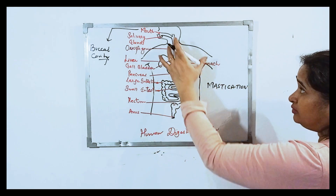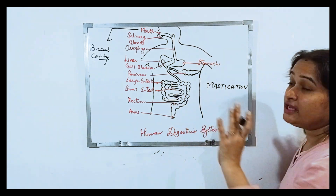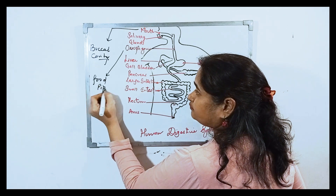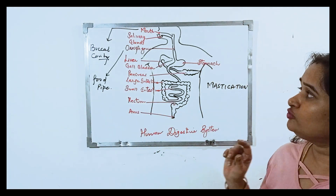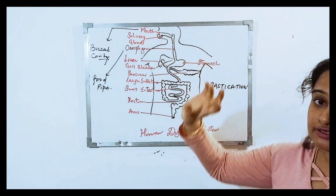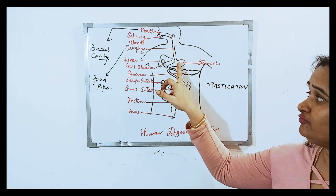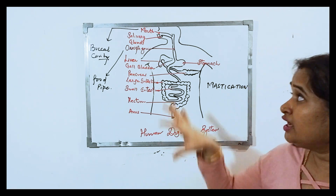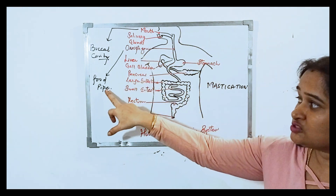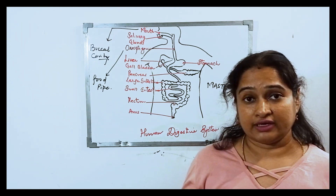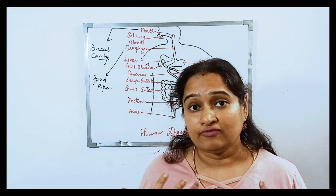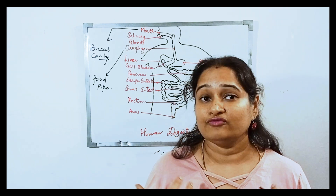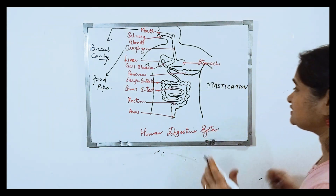This partially digested food passes into the esophagus, which is also called the food pipe. Once the food enters the esophagus, the question is how it reaches the stomach. The walls of the esophagus have a wave-like movement — they show contraction and relaxation — and this movement is called peristalsis.